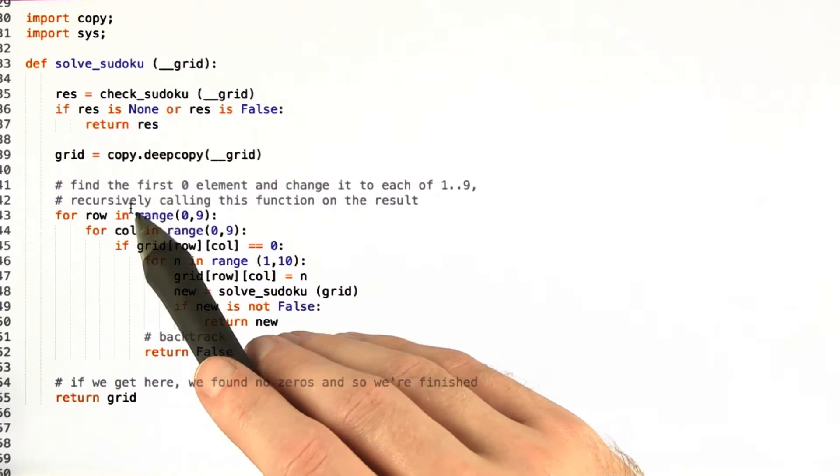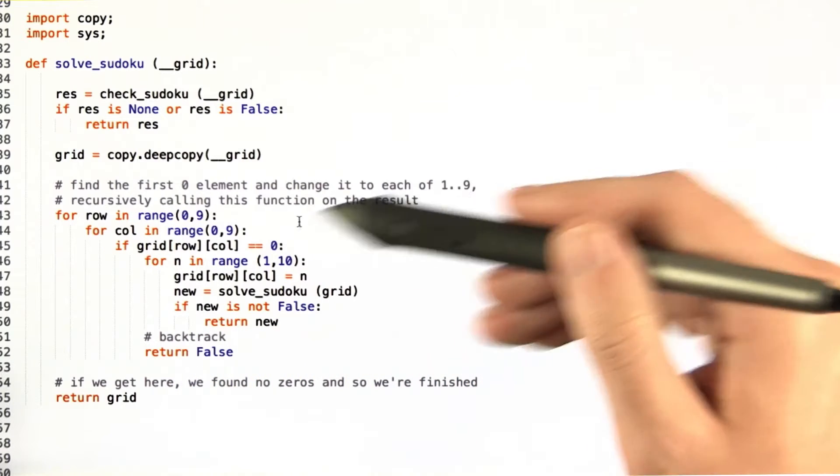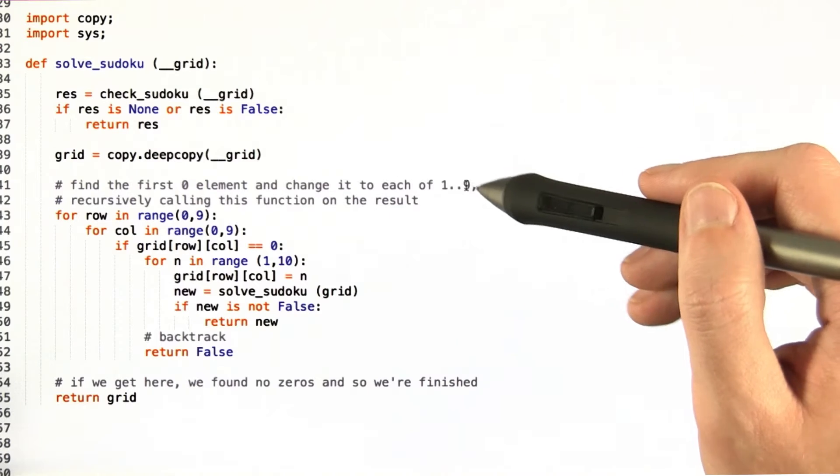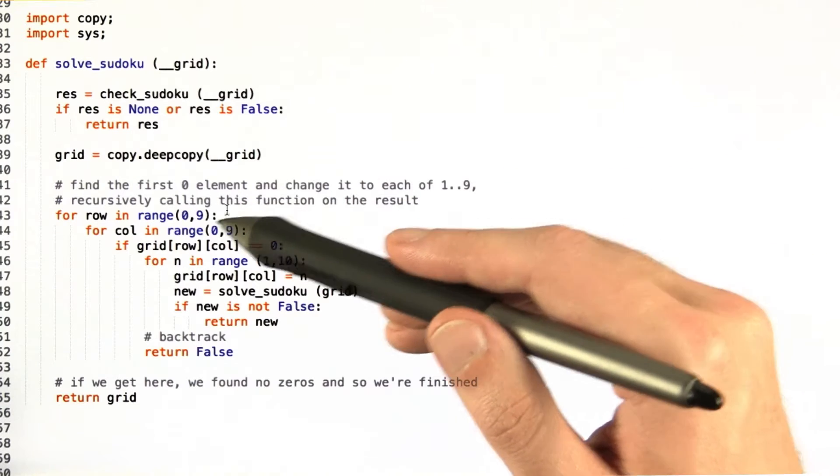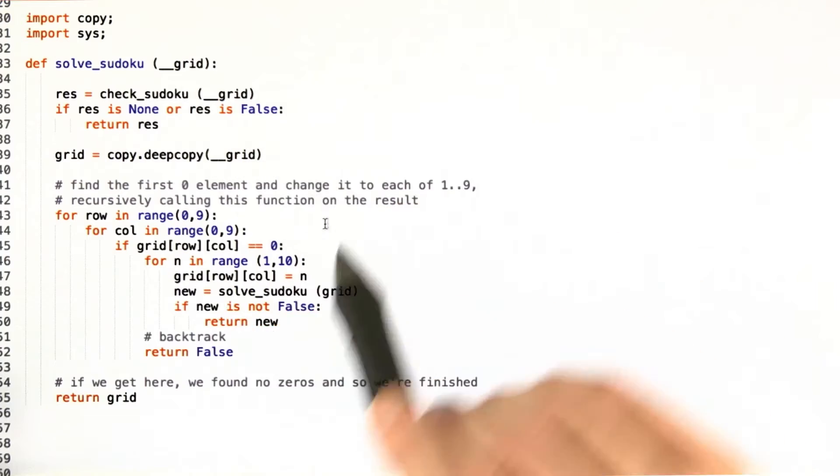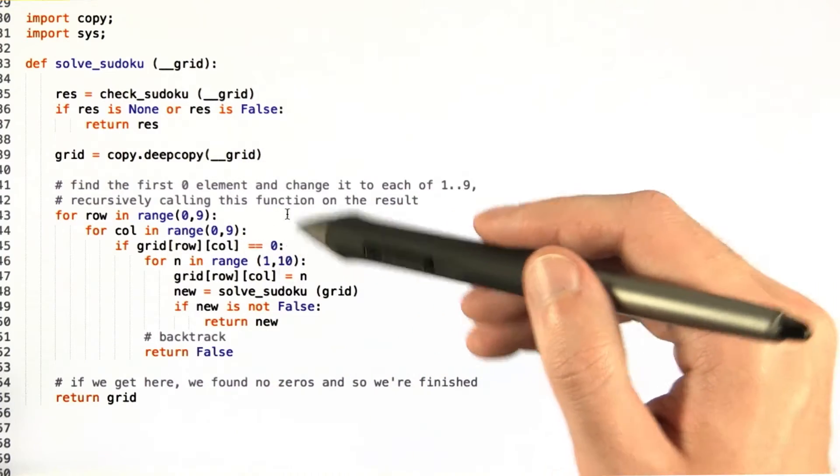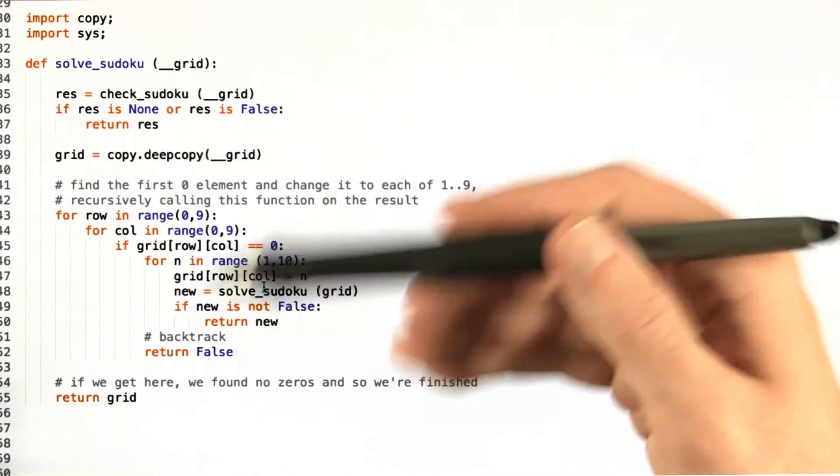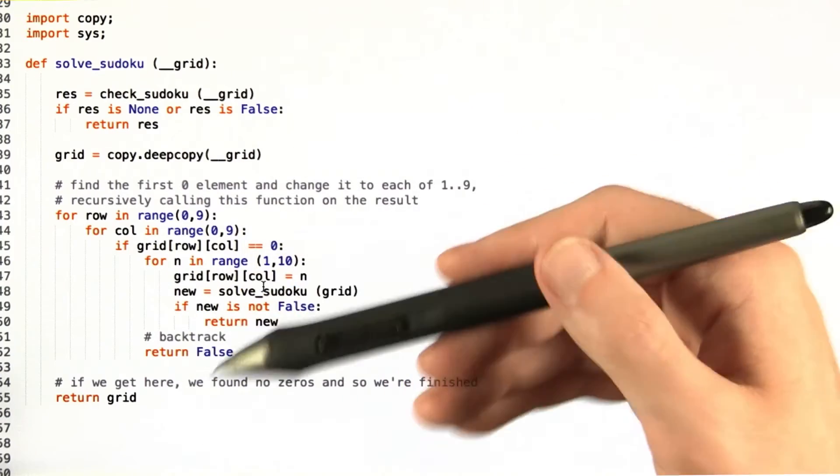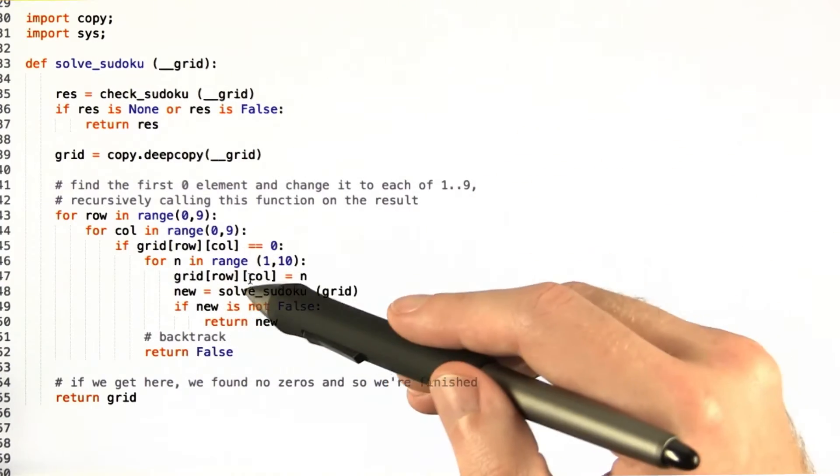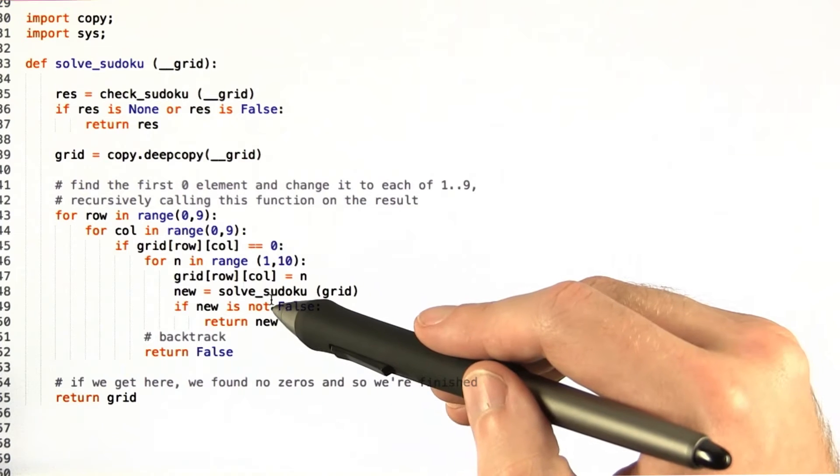Now, we check through the grid for zero elements and we change them to each of one through nine and then recursively call solve sudoku on the result. So this is a very slow brute force process but it's also fairly easy to code up as well.